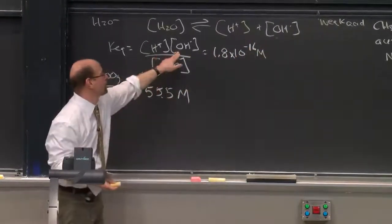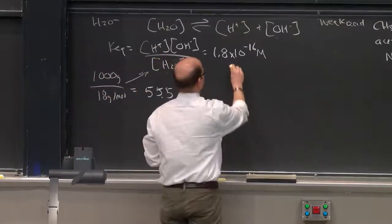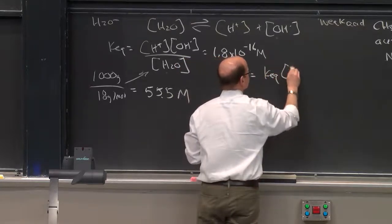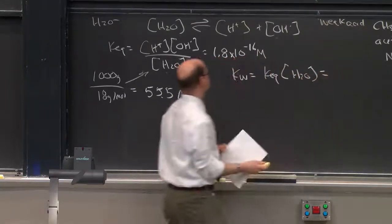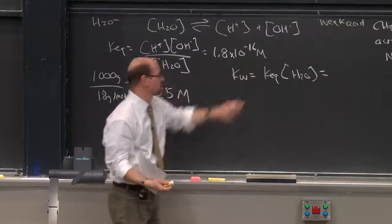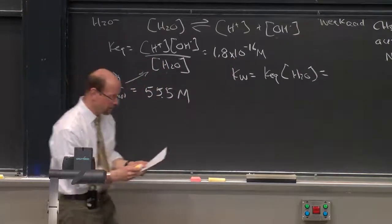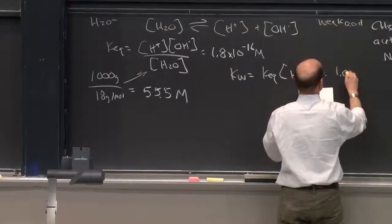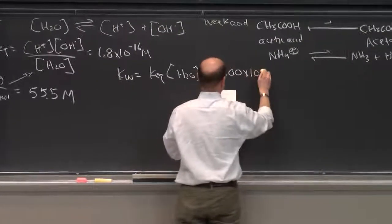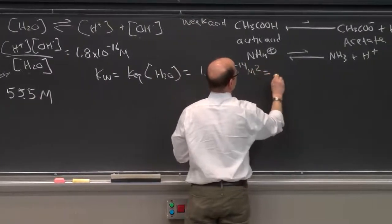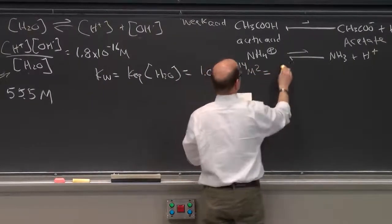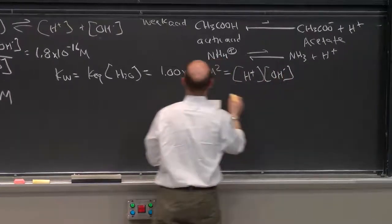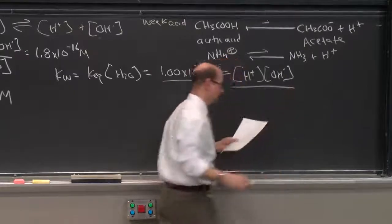That means there's not very much dissociation. We can now define a new constant, Kw, which is Keq times the concentration of H2O. That's 1.8 times 10 to the minus 16 molar times 55.5 molar. This equals 1.00 times 10 to the minus 14 molar squared, which must equal the concentration of protons times the concentration of hydroxide anions.